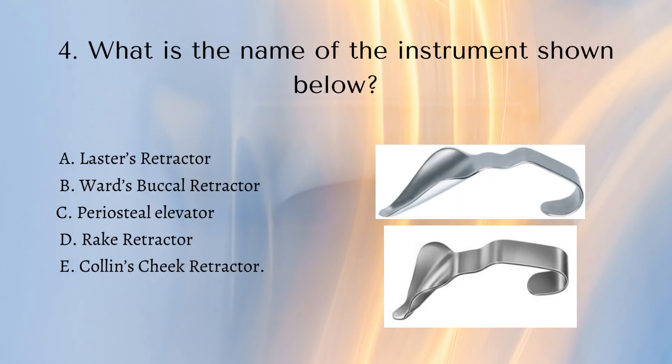Number four: what is the name of the instrument shown below? Is it a Laster's retractor, a Ward's buccal retractor, a periosteal elevator, a rake retractor, or a Collins cheek retractor? This is a very common style of question — identifying instruments is something you just have to learn by doing lots of different questions to recognize them. The correct answer is the Laster's retractor, which is used for third molars. Think of Laster's retractor as being more exclusively used for upper third molars, as they're the last tooth in the arch.